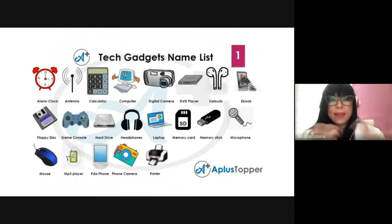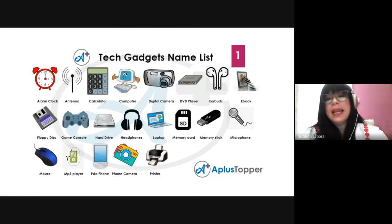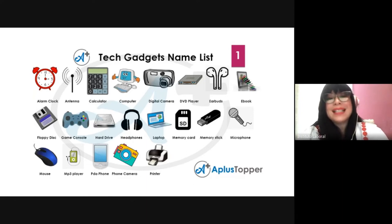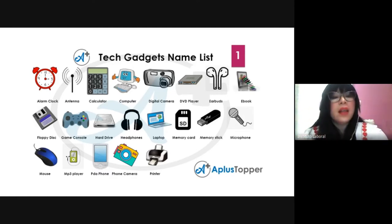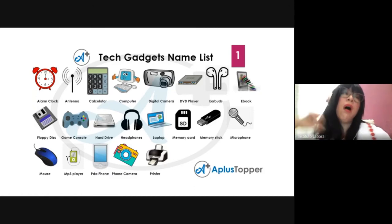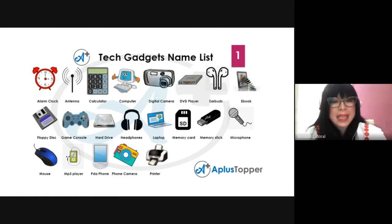Okay, in advance they mentioned something about the task you will have to do by the end. Let me recap what they said. Let's start with learning some new vocabulary words — or reviewing them if you already know them. Tech gadgets: a gadget is a technological device. We have alarm clock — some people use an alarm clock to wake up in the morning — antenna, calculator, computer, digital camera, DVD player, earbuds.